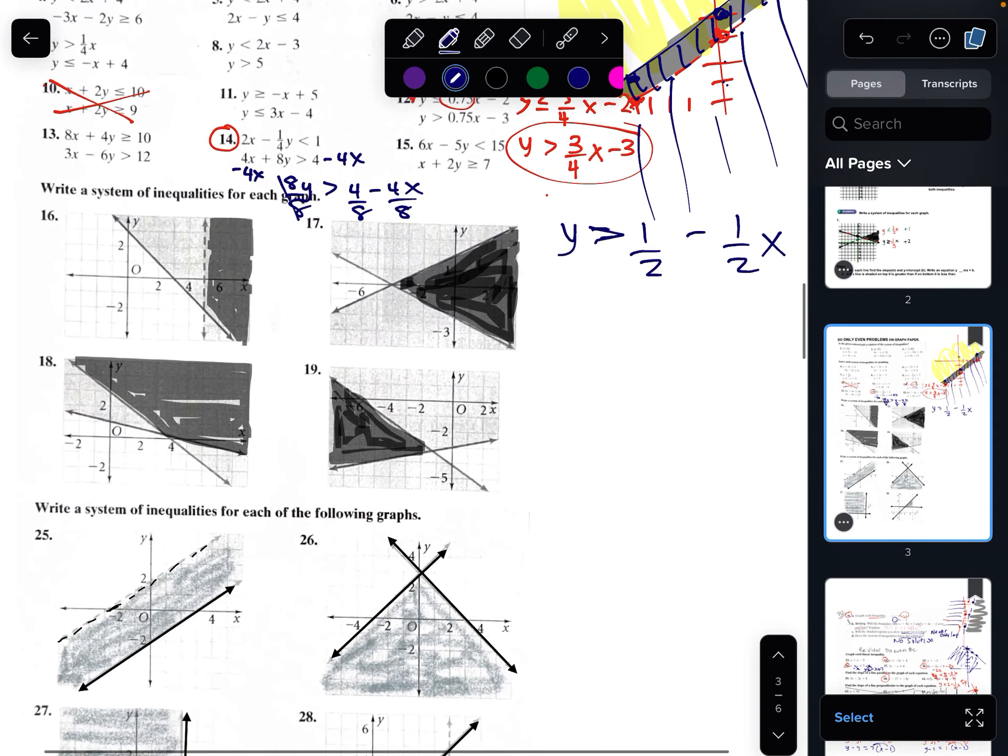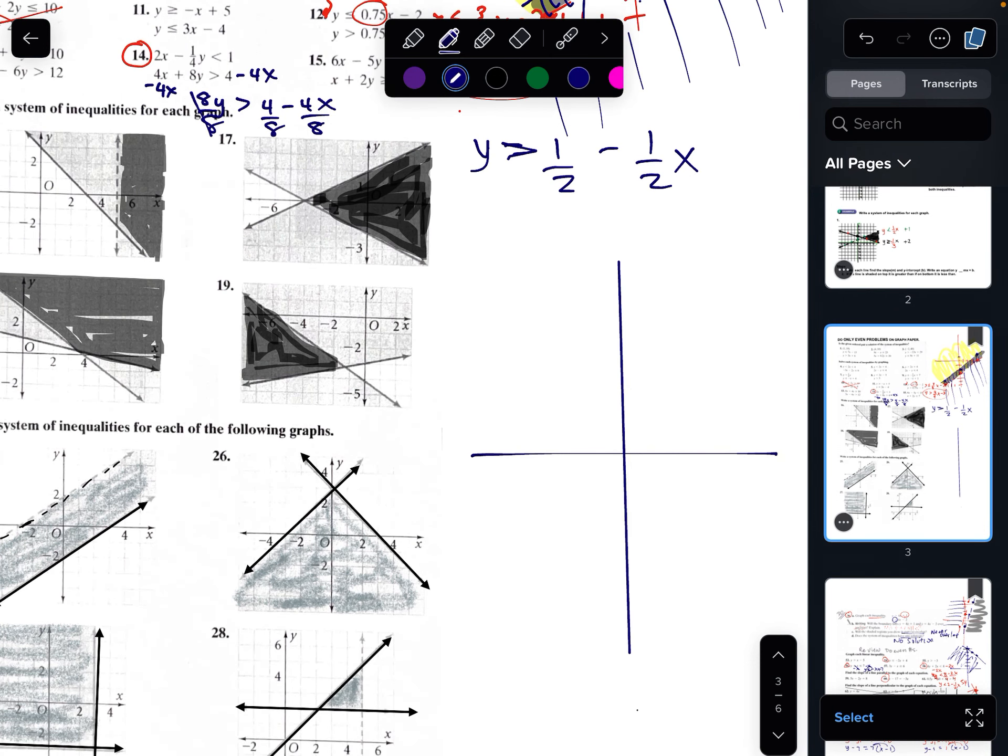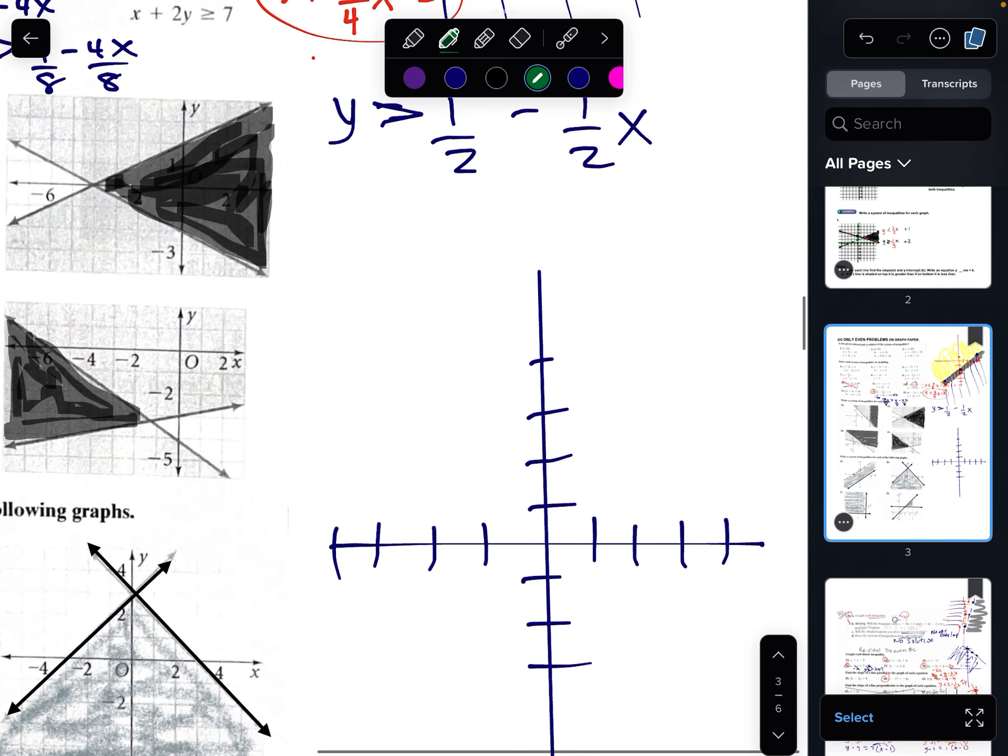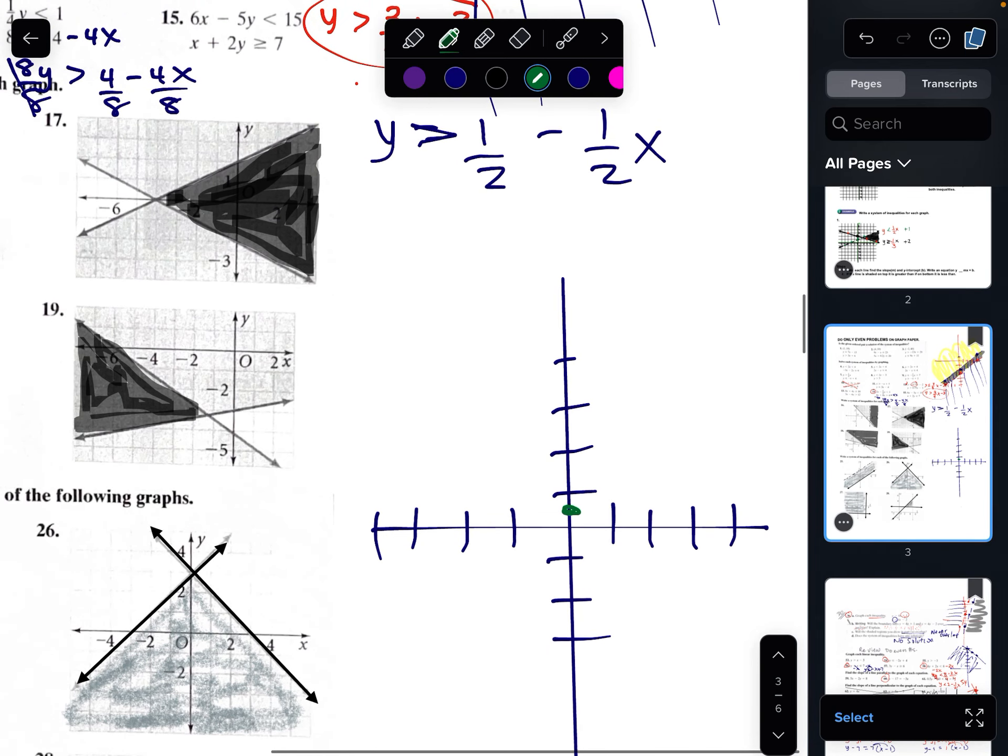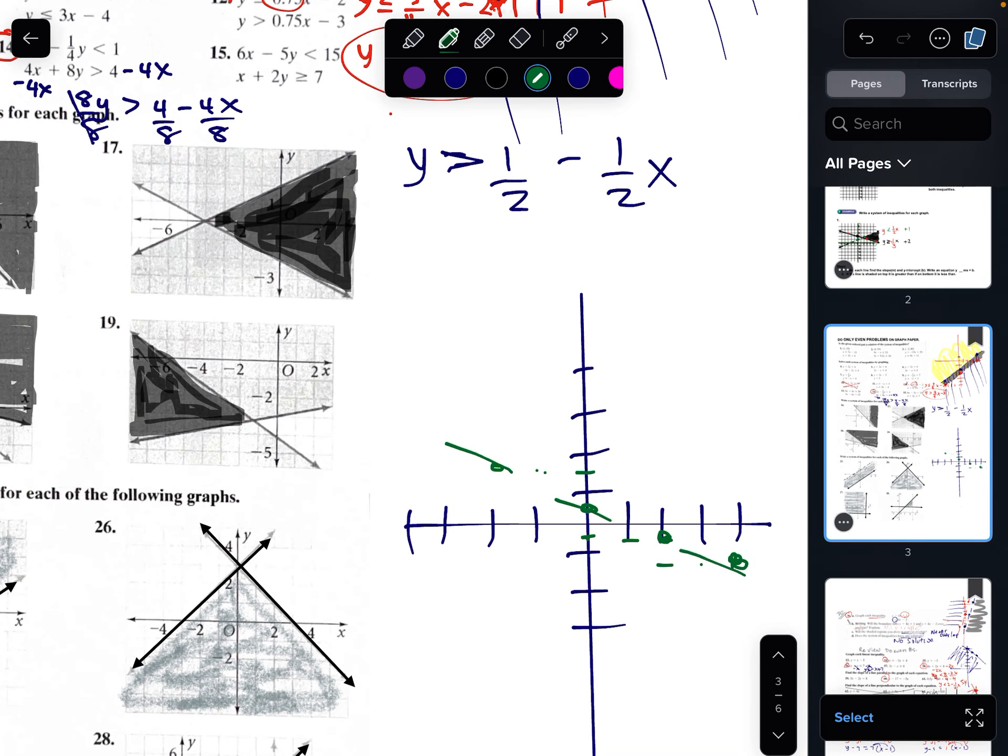How do you graph that? You start out. Here's 1, 2, 3. 1, 2, 3, 4. 1, 2, 3, 4. Okay. You start out at half, which is here. You go down 1. So, halfway. 1 over 2. 1, 2. Down 1 over 1, 2. Okay. Go the other way. 1, 1, 2. And that is a dashed line. Shaded greater than on top.